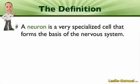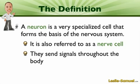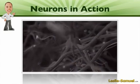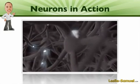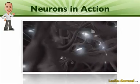Now that we have that situation in mind, let's talk about the definition of a neuron. A neuron is a very specialized cell that forms the basis of the entire nervous system. It's also referred to as a nerve cell. These cells are specialized in that they send signals throughout the body, and they can do that really rapidly. This animation gives you an idea of how these cells can send signals from one to another in a very rapid way — and actually it happens significantly faster than what's depicted here.